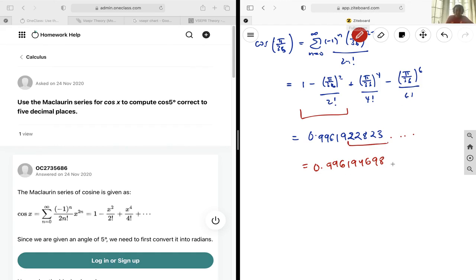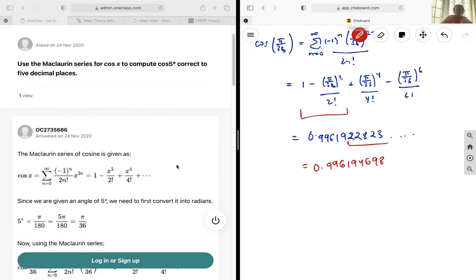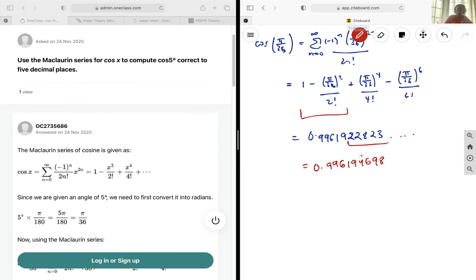And so this is going to be your final answer. So it's best to just leave it in the form of 0.99619.